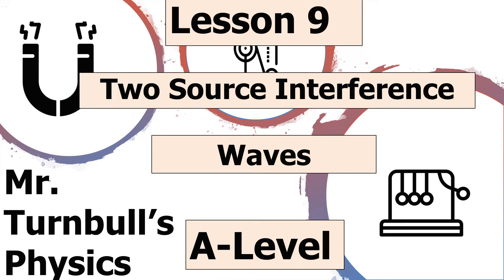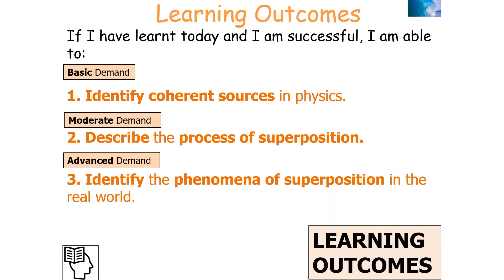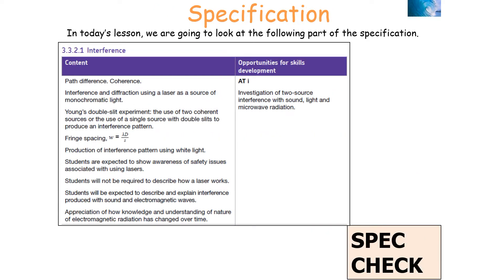Hello, and welcome to this lesson on two-source interference, which is part of the WAVES topic in AQA A-level physics. In today's lesson, we're going to look at how interference patterns form from two sources. By the end, we should be able to identify coherent sources, describe the process of superposition, and identify superposition phenomena in the real world. This covers AQA A-level physics specification 3.3.2.1: interference.